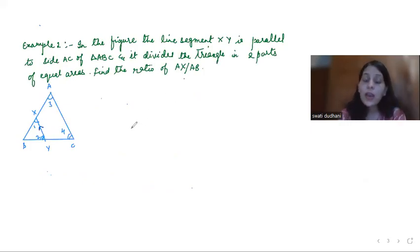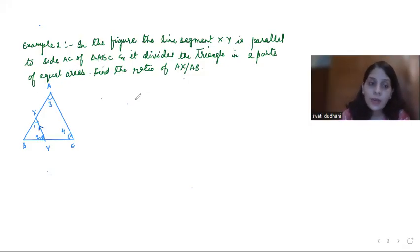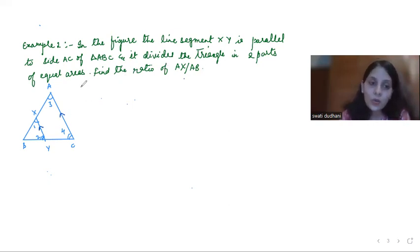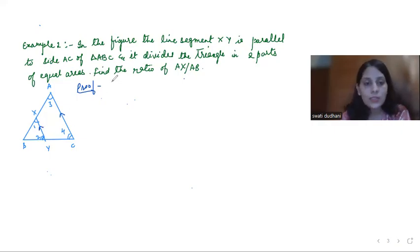Now coming to the next question — this is a very important question and it has come in board exams several times. In the figure, the line segment XY is parallel to side AC of triangle ABC, and it divides the triangle into two parts of equal areas. We need to find the ratio of AX by AB.